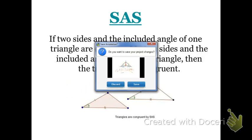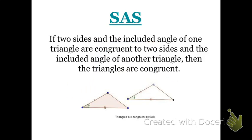In our next slide, we have the Side-Angle-Side Congruence Conjecture, and that's also true. If two sides and the included angle — meaning the angle in between those two sides — of one triangle are congruent to two sides and the included angle of another triangle, then the two triangles are congruent. We'll investigate this in class, so just trust me on this one.